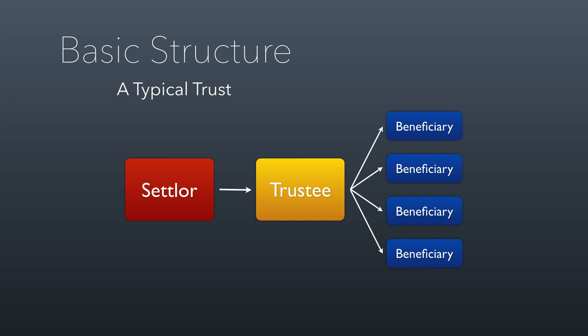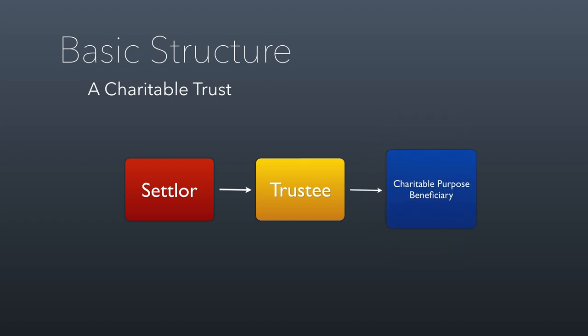A charitable trust is different — instead of swapping out the owners as we do with a nonprofit corporation, we swap out the beneficiaries. A charitable trust can work two ways. One: the beneficiary can be an identified 501(c)(3) that carries out a charitable purpose. For example, I could give my house to a trustee saying I want you to use this to benefit BYU. BYU is recognized as a charitable entity, so this would be a valid charitable trust.